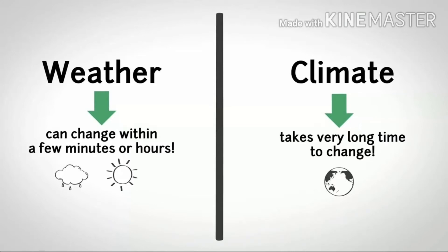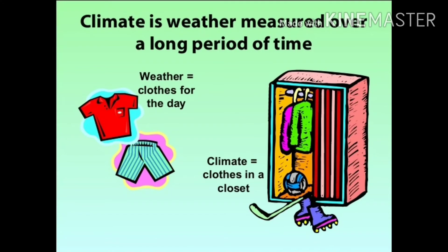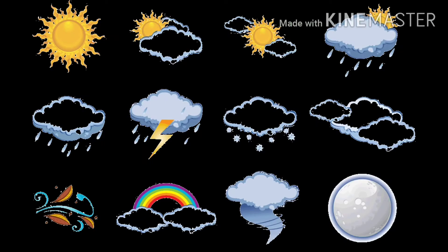Here is an example displayed on screen: the clothes you wear for the day reflect today's weather — if it is sunny or rainy you pick appropriate clothes. But whatever clothes you have in your wardrobe usually defines your climate. For instance, living in coastal regions, I don't have skiing or skating equipment because our coastal climate is hot and humid — there are no hailstones or snow here.